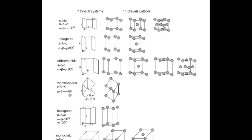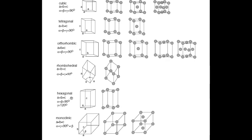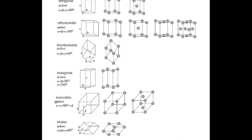In the hexagonal system, the third dimension height is different, alpha and beta are 90 degrees, and gamma is 120 degrees. The next system is monoclinic: A is not equal to B, which is not equal to C, with three sides of different lengths, and angles alpha equals gamma equals 90 degrees, which is not equal to beta.